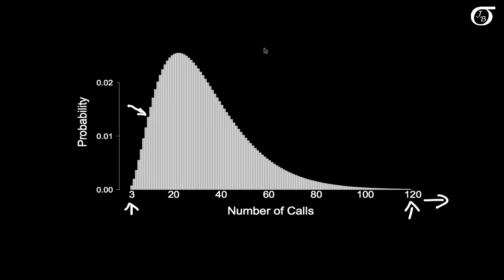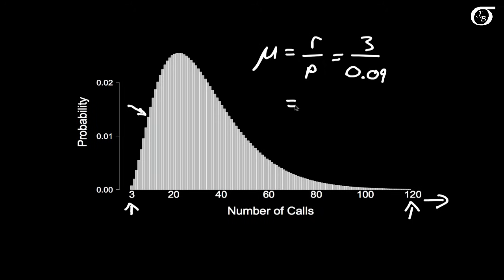The mean number of calls required to get the third success is r over p, which is 3 over 0.09, and that works out to 33 and a third. So on average we're going to have to make about 33 calls before completing the task.